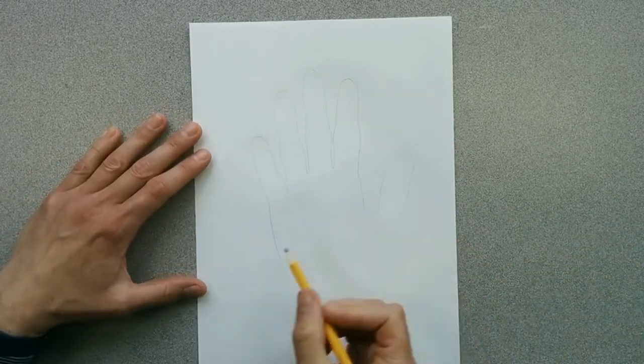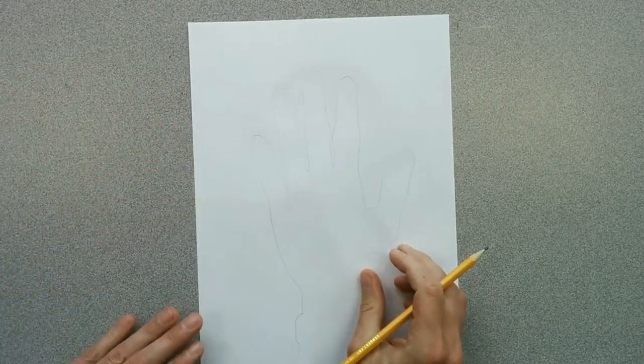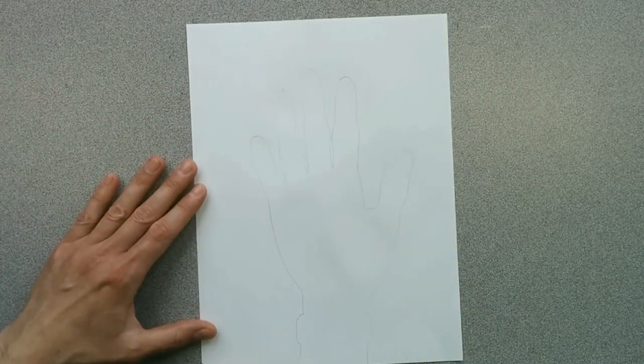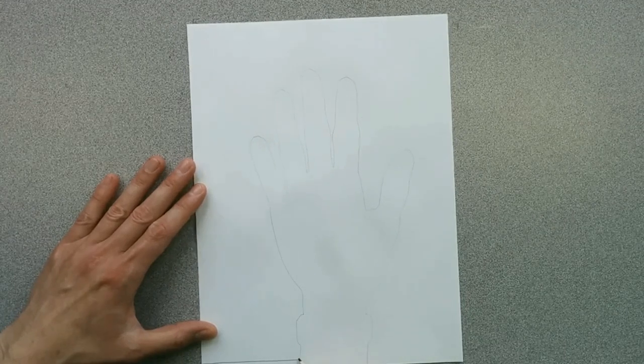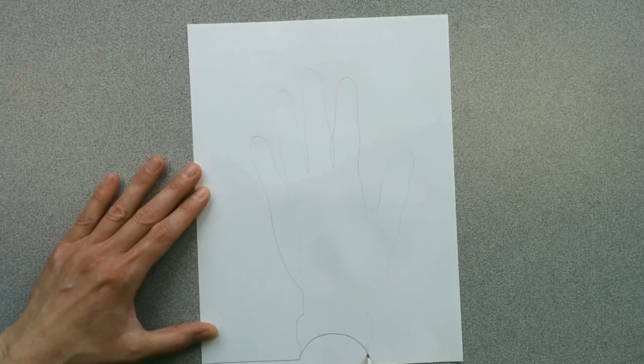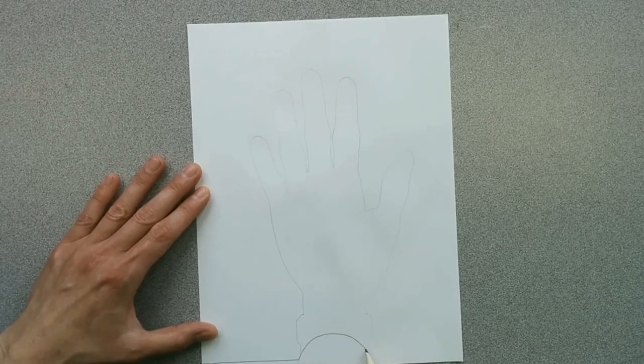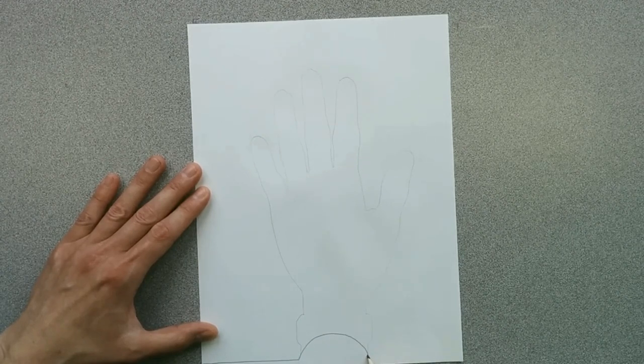The next step is to start drawing those lines across. Now all the lines on the background around the hand are going to be straight across. So I'm going to go ahead and start with that. Go straight across here. But when I get to the wrist, down here, I'm going to curve up like this. You want to make sure it's a tall curve. Not just a short curve, but a tall curve. It makes it look more like it's 3D.